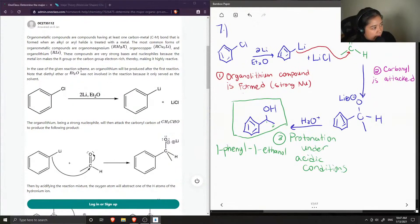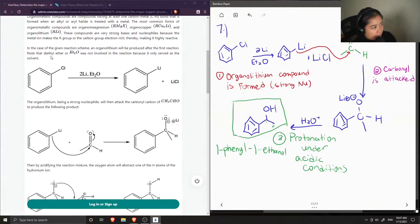In the case of the given reaction scheme, an organolithium will be produced after the first reaction. Note that diethyl ether was not involved in the reaction because it only served as the solvent.